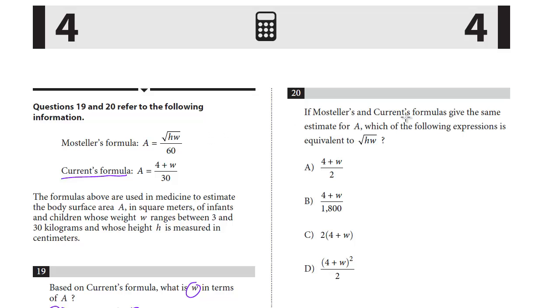So here we're dealing with both formulas, and you see they're both set equal to A, and they're telling us that they give the same value. So the way to solve this problem is you set these formulas equal, because the A's are equal, and then we just isolate the square root of HW.